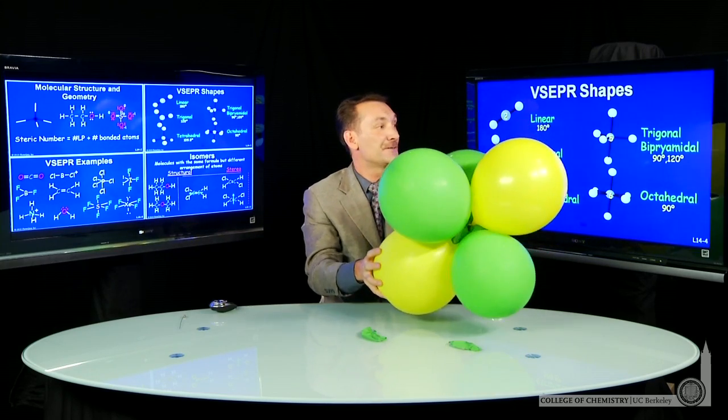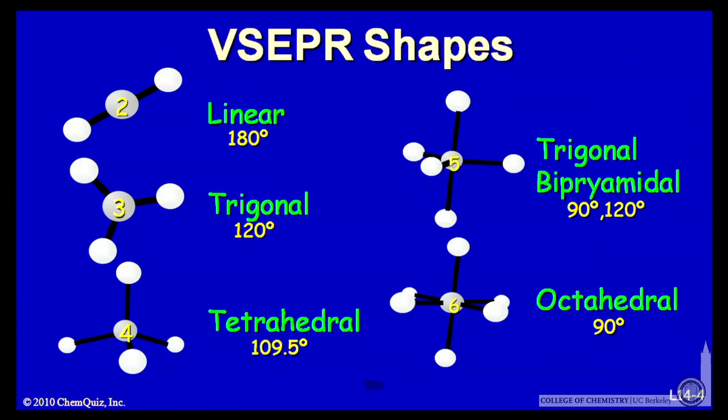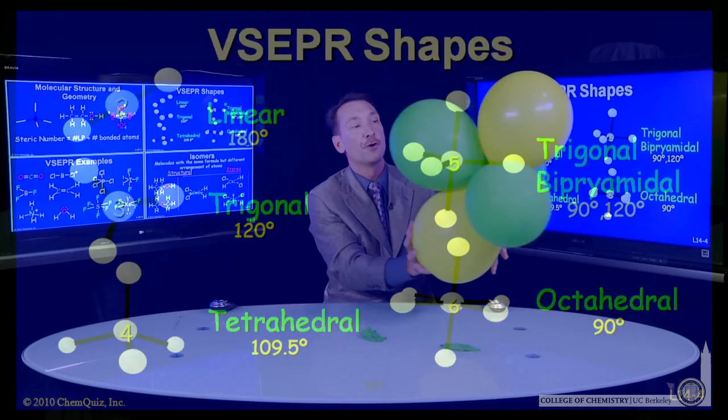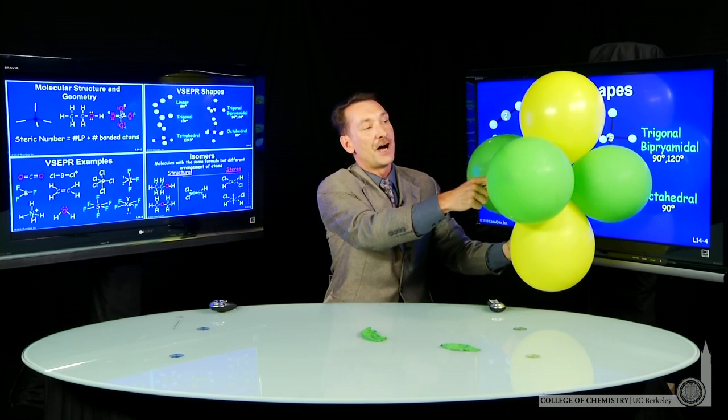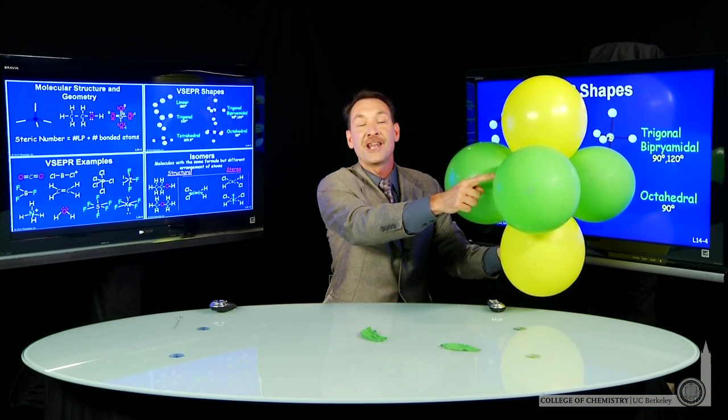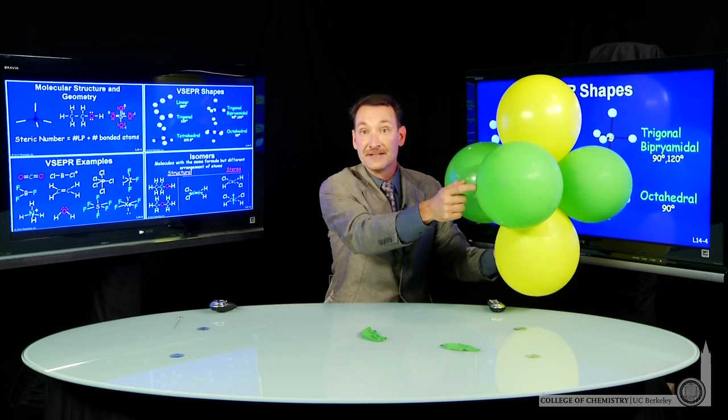Five things in space, two bond angles to describe. So I have a bond angle of 90 here and a bond angle of 120 about the equatorial positions. So here's a 90 degree bond angle between green and yellow, but the green greens are 120 degrees. Five things,